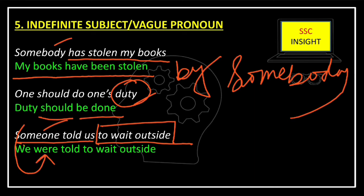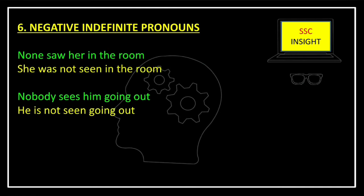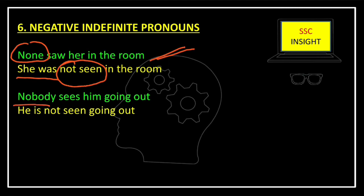Next: 'Someone told us to wait outside' — this will be converted to 'We were told to wait outside.' If it were 'Dipika told us to wait outside,' then it would be 'We were told by Dipika to wait outside.' But since it is 'someone,' it is not necessary to mention. If any sentence begins with a negative indefinite pronoun, its passive voice will be converted into a negative sentence. For example: 'None saw her in the room' — passive: 'She was not seen in the room.' 'Nobody sees him going out' — passive: 'He is not seen going out.'